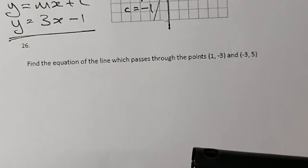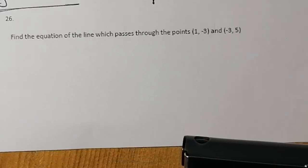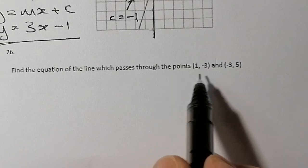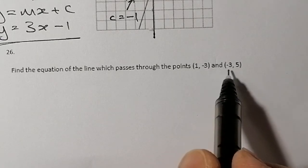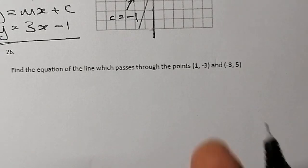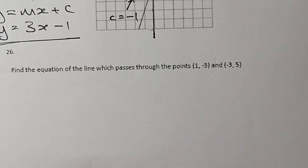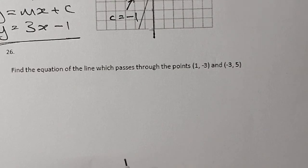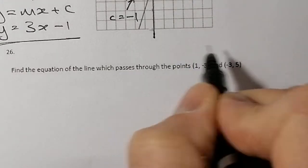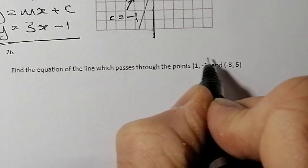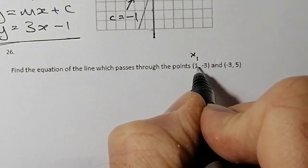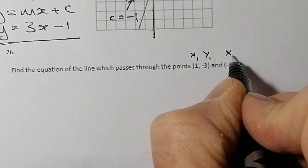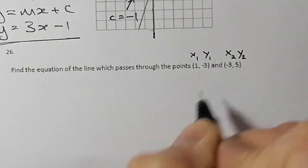Right, the last question. Find the equation of the line which passes through the points (1, -3) and (-3, 5). I don't have a point where it crosses the y-axis, so I'll use one of the other two methods from question 24. I'll call (1, -3) the first point — x1, y1 — and (-3, 5) the second point — x2, y2.